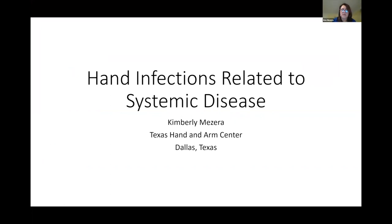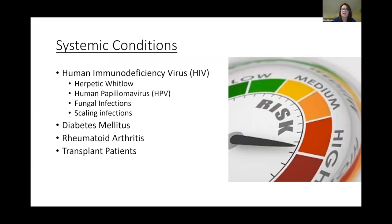I'm happy to talk tonight because this is a very important topic. My task is to discuss hand infections related to patients with systemic disease. We've highlighted four particular patient population groups: HIV, which includes herpetic whitlow, HPV, fungal infections, and other scaling infections; diabetes; rheumatoid arthritis; and the transplant patient.